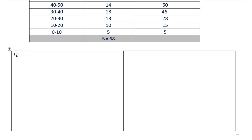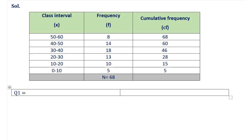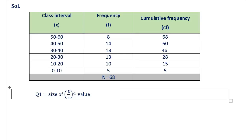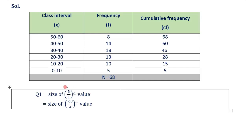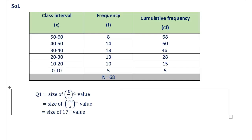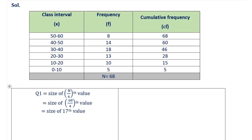Next, calculate Q1, which we also call the 25th percentile or P25. Q1 = size of the N/4th value. In our case N is 68, so Q1 = size of 68/4 = 17th value. Now we check which class interval the 17th value falls in. The next cumulative frequency after 17 is 28, so Q1 falls in the class interval with cumulative frequency 28, which is the 20 to 30 class interval.